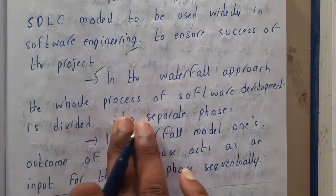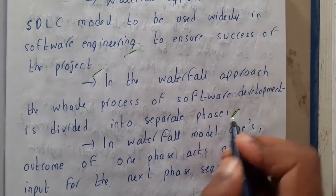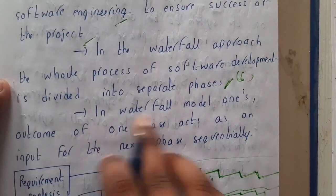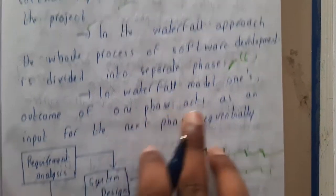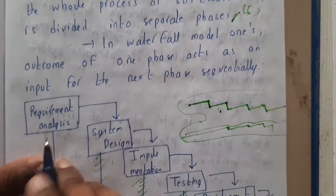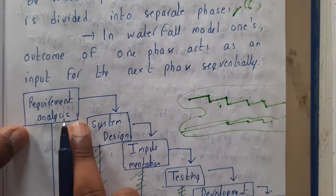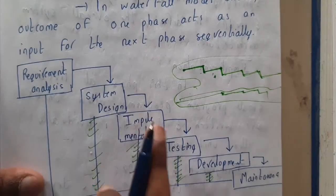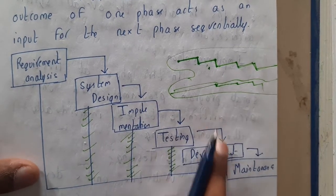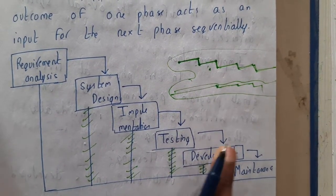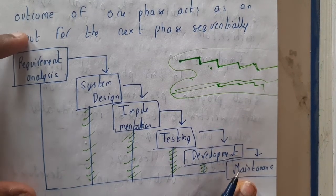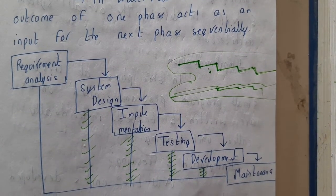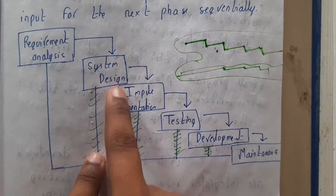In the waterfall process approach, the whole software development process is divided into six separate phases. Once the outcome of one phase acts as input to the next phase — requirement analysis leads to system design, system design leads to implementation, implementation leads to testing, testing leads to deployment, and deployment leads to maintenance.